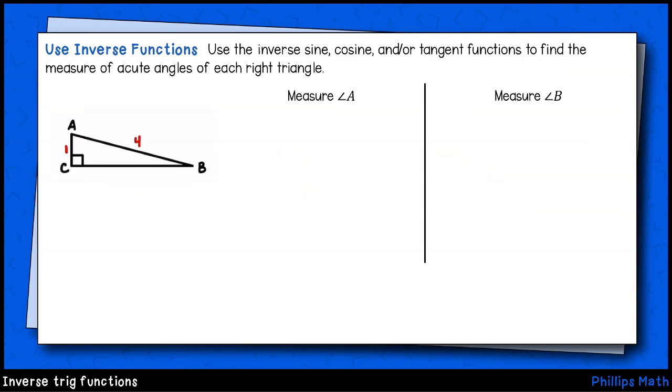We have a right triangle ABC with a height of one and a hypotenuse of four. We want to solve for angles A and B. For angle A, we can say that we have the side adjacent to that angle and the hypotenuse. So inverse cosine will work well here.